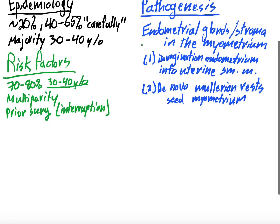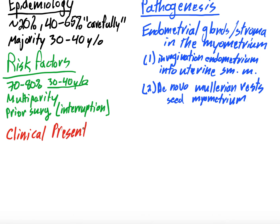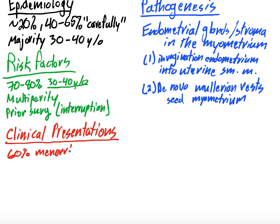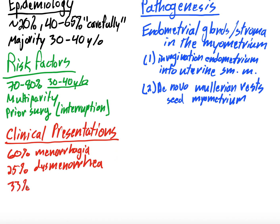For clinical presentation, the primary symptom is abnormal uterine bleeding. About 60% of patients present with menorrhagia — heavy bleeding. About 25% present with dysmenorrhea, or pain with menstruation. This makes sense, since those endometrial glands and stroma are sloughing off within the nerve-rich muscle. Then 33% of patients are actually asymptomatic.